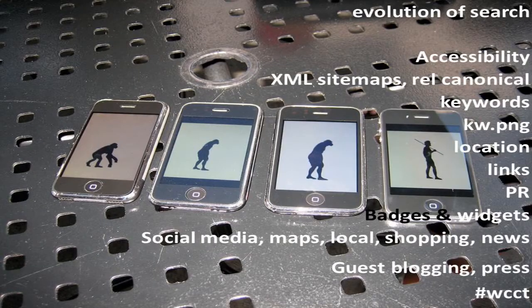Along came the guys in the black hats, gaming the system really quickly, and Google had to adjust the algorithms accordingly. Various other elements came into the SEO ranking factors — things like XML sitemaps, REL canonical, and using keywords in the way you describe your images. So instead of uploading a file as img091453.jpg, you rename the picture to wordcampcapetown2011.png. Because that will rank in Google image search, and because you're using that image on a page about that topic, it works as another ranking signal.